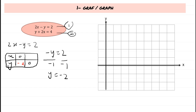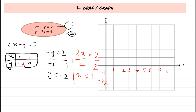Then when y equals 0, we have 2x minus 0, so 2x equals 2, and dividing both sides by 2 gives x equals 1. Now we draw the number table and plot the points. When x equals 0, y equals negative 2, and when x equals 1, y equals 0. We then draw a linear graph by joining these two points.